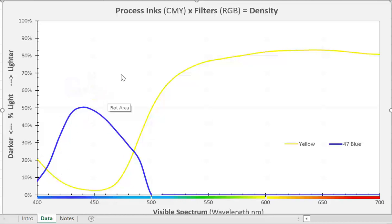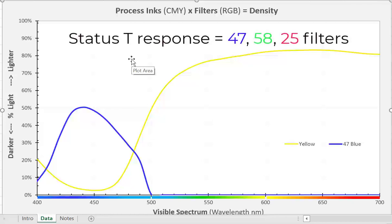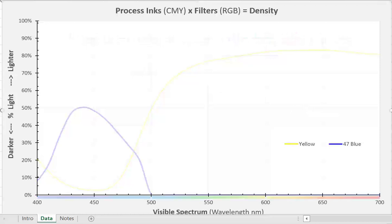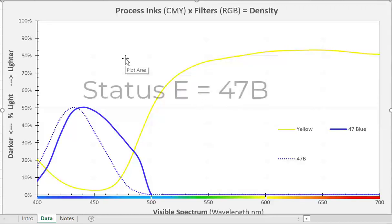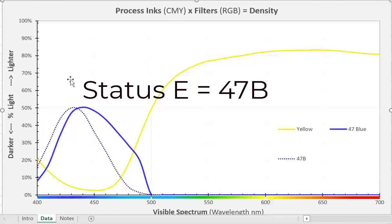Now there is a special case here. We have what we call status T densitometry. Status T densitometry is 47 blue, 58 green, 25 red. However, there is also a status E filtration—E for Europe—where they use a narrower band. Status T densitometry is about 100 nanometers wide. They're wide band filtration bandpass.